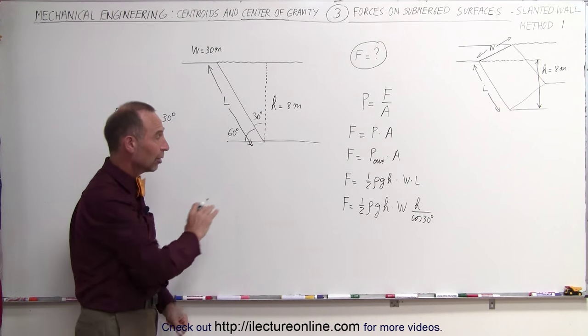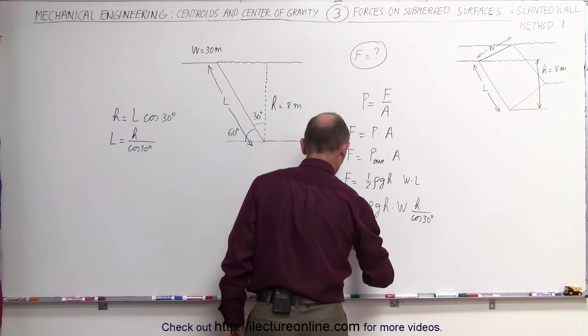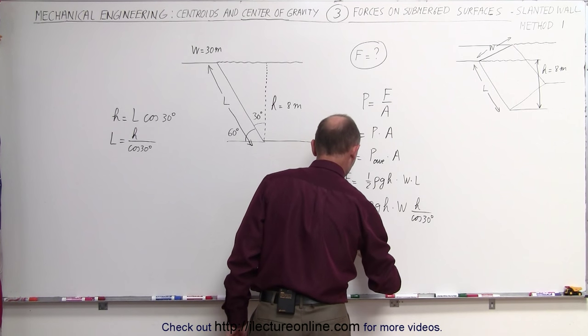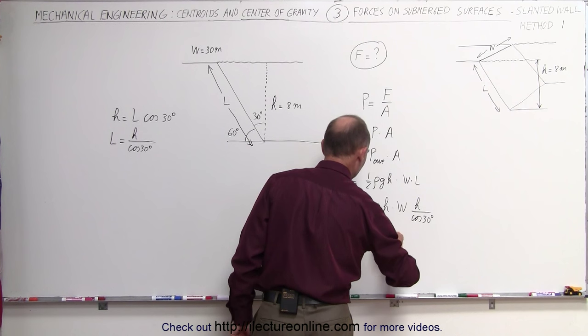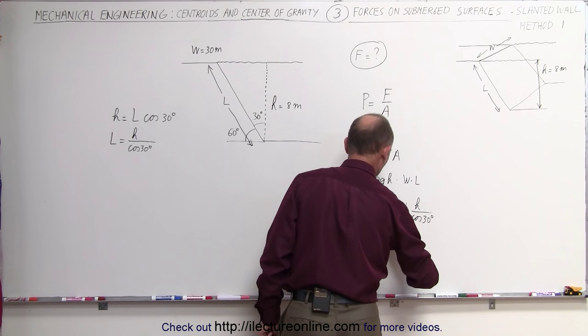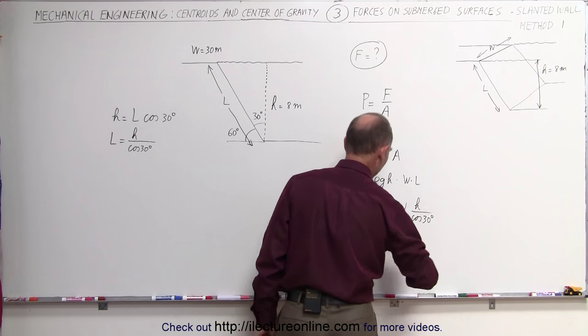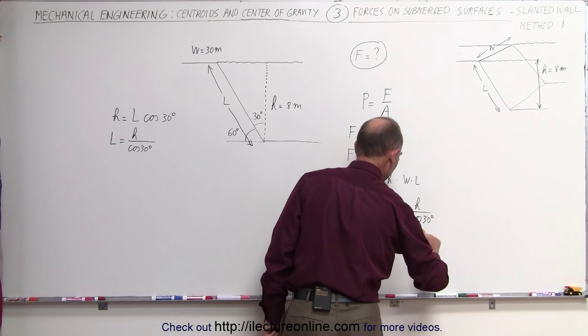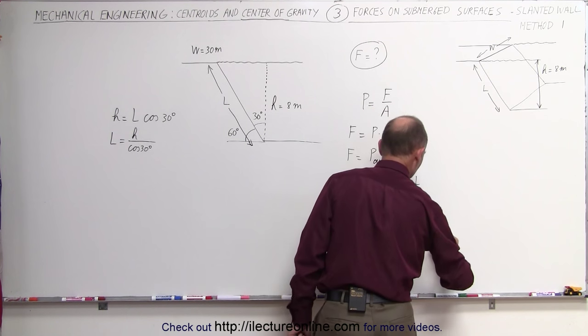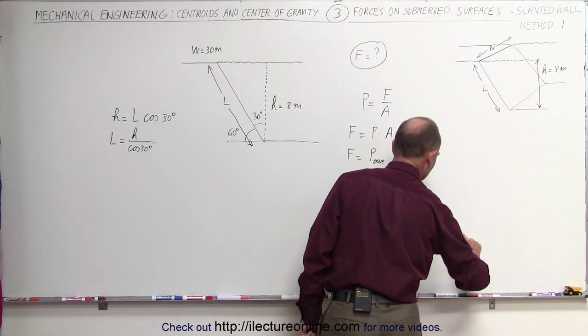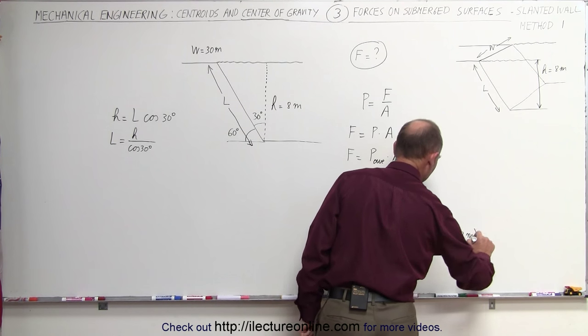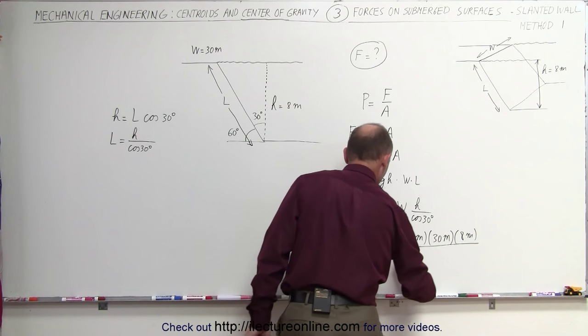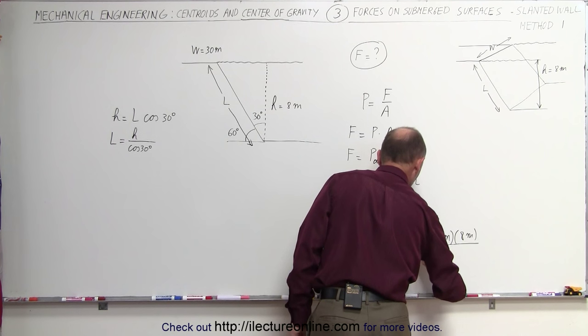F is equal to one-half, the density 1,000 kilograms per cubic meter, G is 9.8 meters per second squared, height is 8 meters, the width is 30 meters, the height again 8 meters, and take the whole thing and divide it by the cosine of 30 degrees.